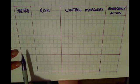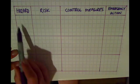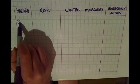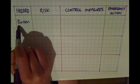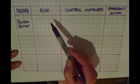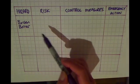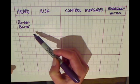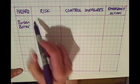Hazards are normally the objects that you are using in the lab. For example, for my first hazard I might write Bunsen burner, and in the risk column I would put the risk that I have from using a Bunsen burner — so in this example I will put the risk is burning yourself.